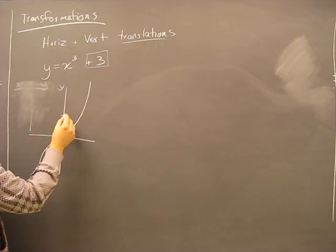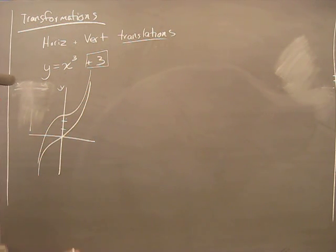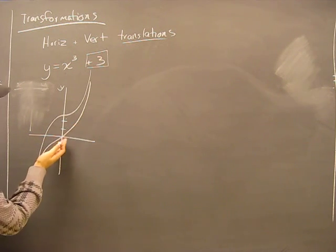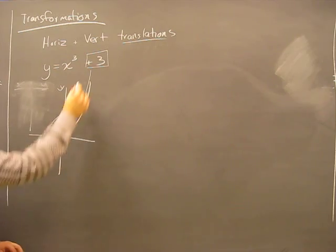What that means is that on the y-axis we move up three units, and there's our new graph. It's this exact function but moved three units up. Simple as that. So that's applying positive vertical translation.